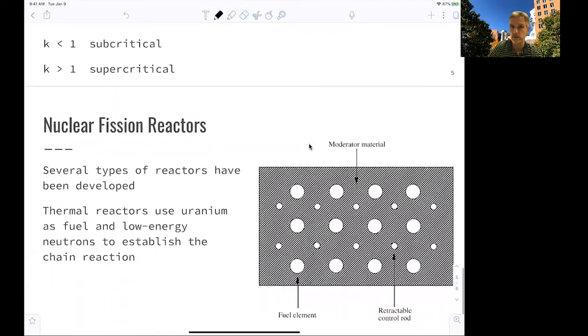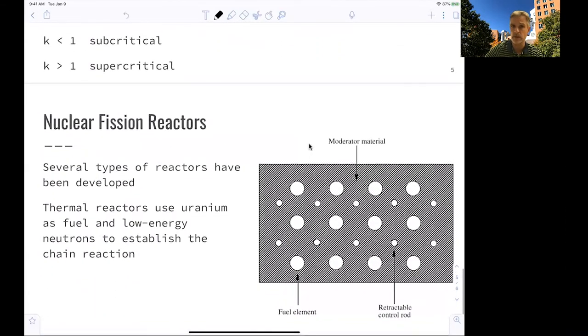And this is exactly what's used in nuclear fission reactors. There are several types of reactors available. The example I want to discuss here very briefly is the one of a thermal reactor which uses uranium as fuel and low energy neutrons to establish the chain reaction, as we just discussed. So this is the sketch here, and the sketch has three different elements. The first one is a fuel element. The fuel element can be naturally occurring uranium.